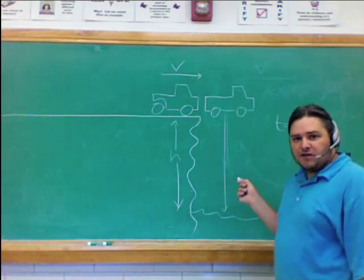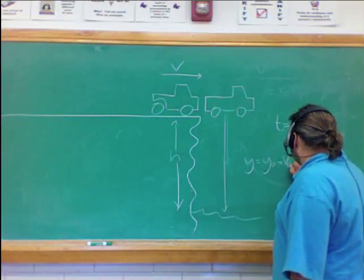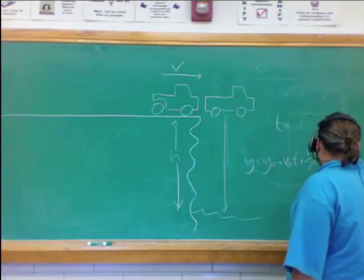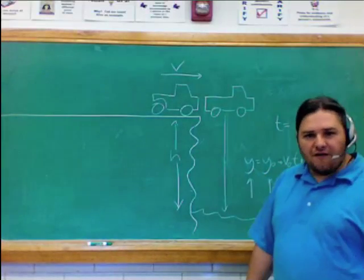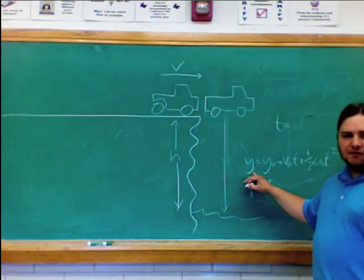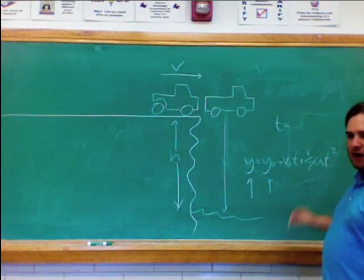See that I don't have x's in there? I have y's now. So, I have final position in the y is equal to initial position, plus v naught t, plus one-half at squared.